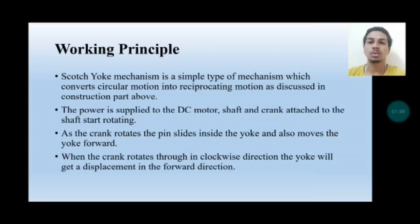When power is supplied to the DC motor, the shaft and crank attached to the shaft start rotating. As the crank rotates, the pin lying inside the yoke also moves forward. When the crank rotates in a clockwise direction, the yoke gets a displacement in the forward direction.